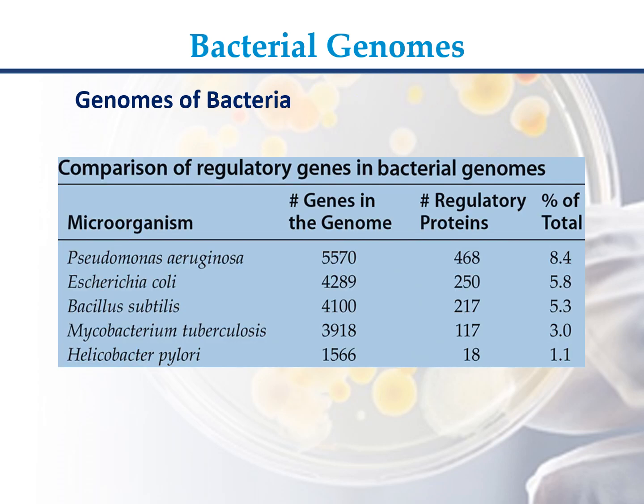Comparison of Regulatory Genes in Bacterial Genomes: Pseudomonas aeruginosa has 5570 genes with 468 regulatory proteins (8.4%). Escherichia coli has 5289 genes with 250 regulatory proteins (5.8%). Mycobacterium tuberculosis has 3918 genes with 117 regulatory proteins (3.0%). Helicobacter pylori has 1566 genes with only 18 regulatory proteins (1.1%).